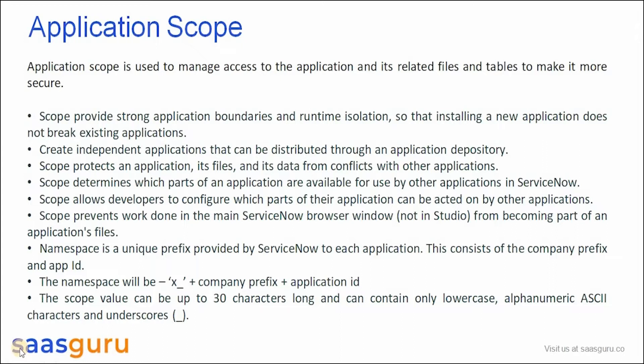The namespace has a unique nomenclature where all names begin with the letter X, followed by the Company Prefix and the Application ID. For example, if there is an application prepared by Saskuru to document technical certifications, then the namespace would be X plus Saskuru, and then the Application ID, which could be TechCerts.